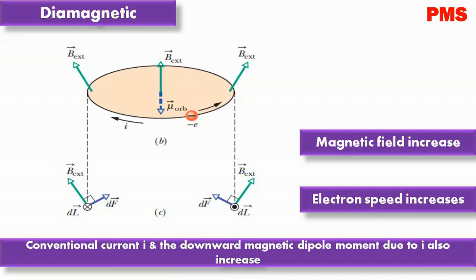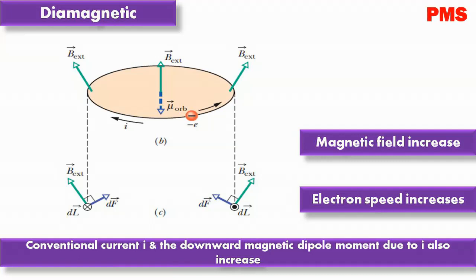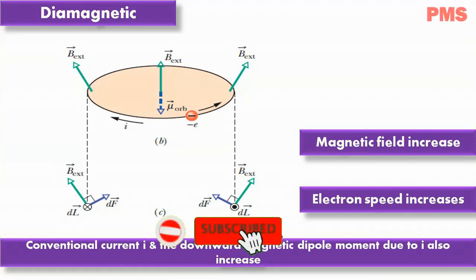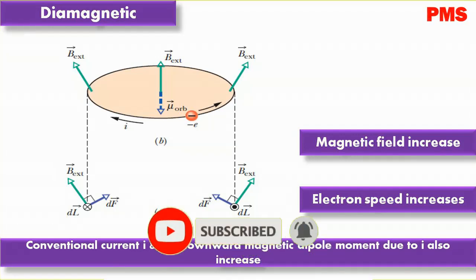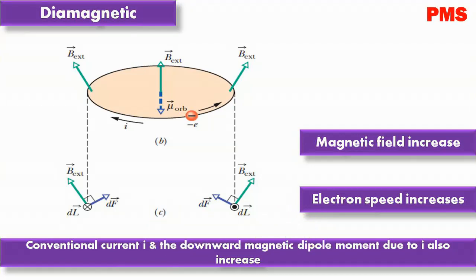Let us see how the induced electric field affects the orbital electrons. The counterclockwise orbiting electron is accelerated by the clockwise electric field. Thus, as the external magnetic field increases to its maximum value, the electron speed increases to a maximum value. This means that the associated conventional current i and downward magnetic dipole moment also increase.